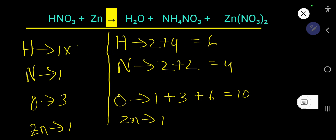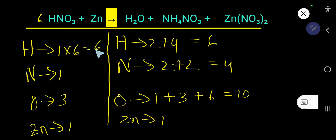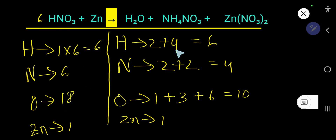You can multiply by 6 to get 6 hydrogen. The coefficient must come before the compound this hydrogen comes from, so we place 6 in front of HNO₃. That gives us 6 hydrogen, 6 nitrogen, and 3 times 6 = 18 oxygen on the left. Hydrogen is now balanced, but nitrogen is 6 on the left and 4 on the right — nitrogen is not balanced.